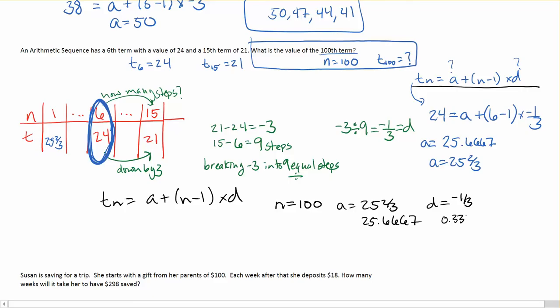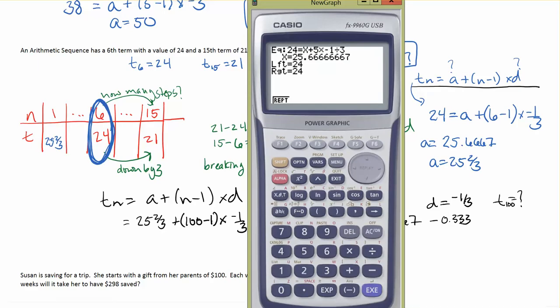So, tn is equal to a plus n minus 1 times d. And, they want me to find the hundredth term. So, that means, in this case, I know that n is equal to 100. a is equal to 25 and 2 thirds. Or, you could say 25.66667 if you wanted to. But, you won't get as precise an answer. And, your d is equal to negative 1 third. And, you could say 0.333. But, you'll get a more precise answer if you do it as a fraction. So, let's plug in what I know. Because, t is what I'm looking for. So, I don't know what t is. But, I know that a is going to be 25 and 2 thirds plus 100 minus 1 times negative 1 third.